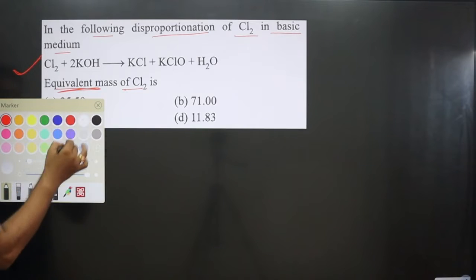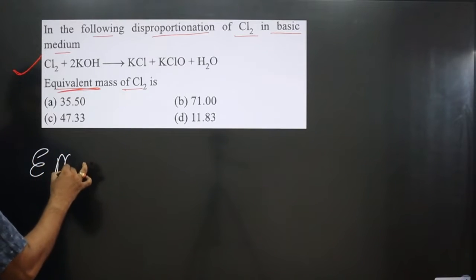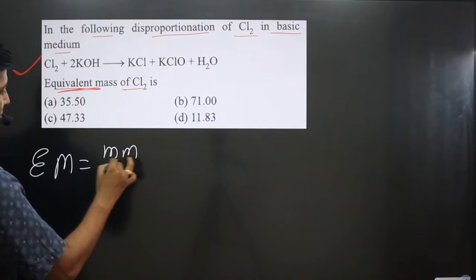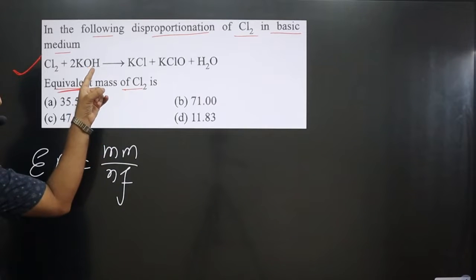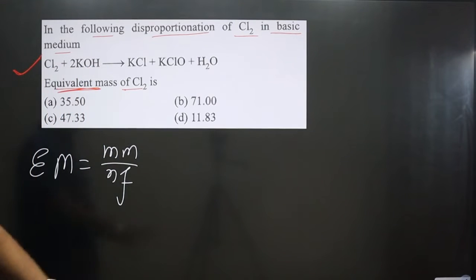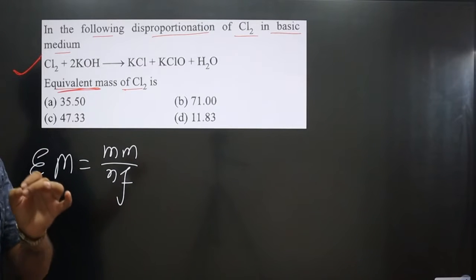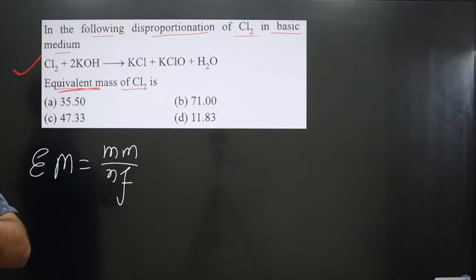The formula for the equivalent mass we have learned: molar mass divided by n factor value. So molar mass for Cl2 we can calculate by using the periodic table and n factor value we can calculate by using the given equation. And always keep in mind we have a different way of calculating n factor value for disproportionate redox reaction. Very special reaction is given here. First, we write down the oxidation number of Cl on both sides of the equation.